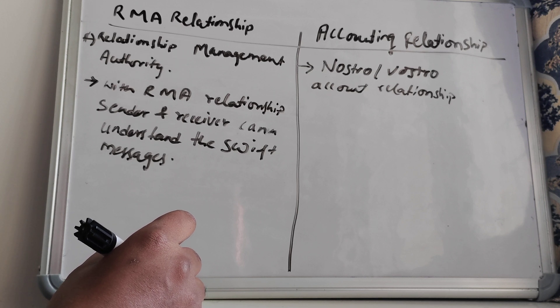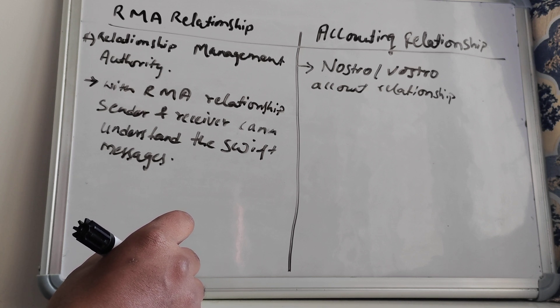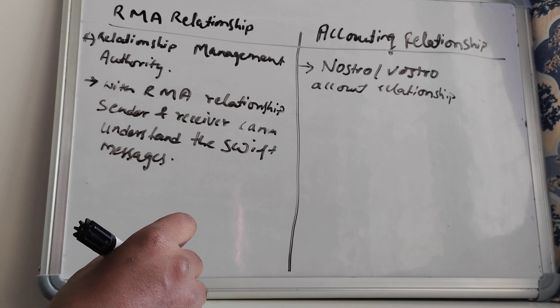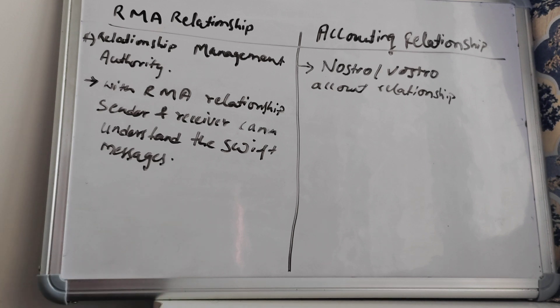RMA relationship is the capability to read and understand the SWIFT messages being sent between sender and receiver. So this is all that the RMA and accounting relationship mean.